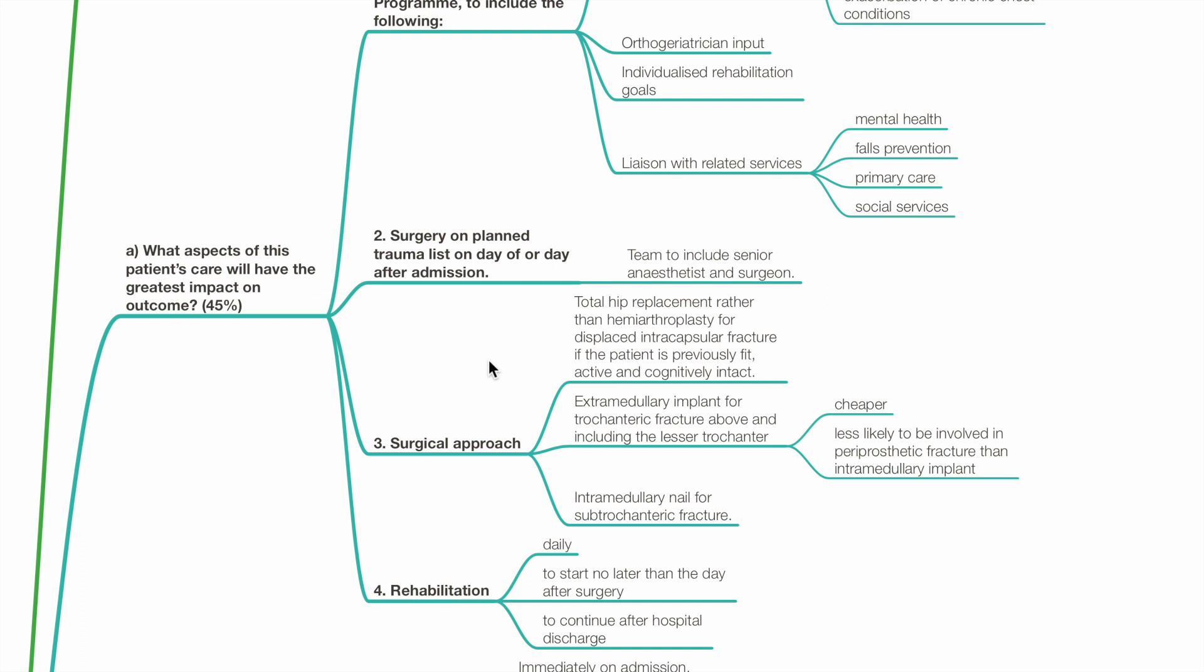Number 3, surgical approach. Total hip replacement rather than hemiarthroplasty for displaced intracapsular fracture if the patient is previously fit, active, and cognitively intact.